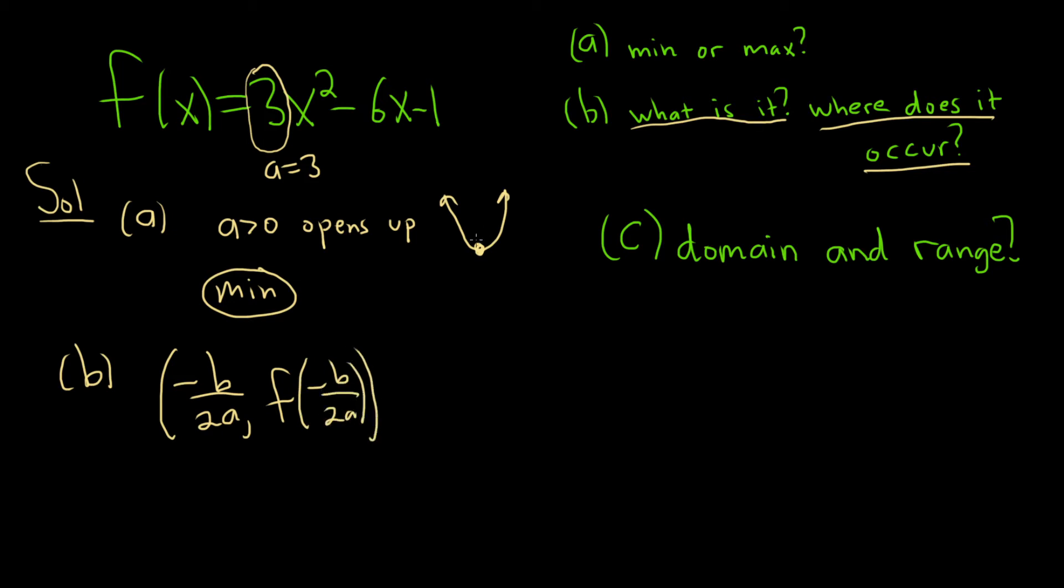So this is the point that's right here. So this x value is where it occurs, and this y value is going to be the actual minimum. So in this problem, it looks like A is 3, and B is negative 6.